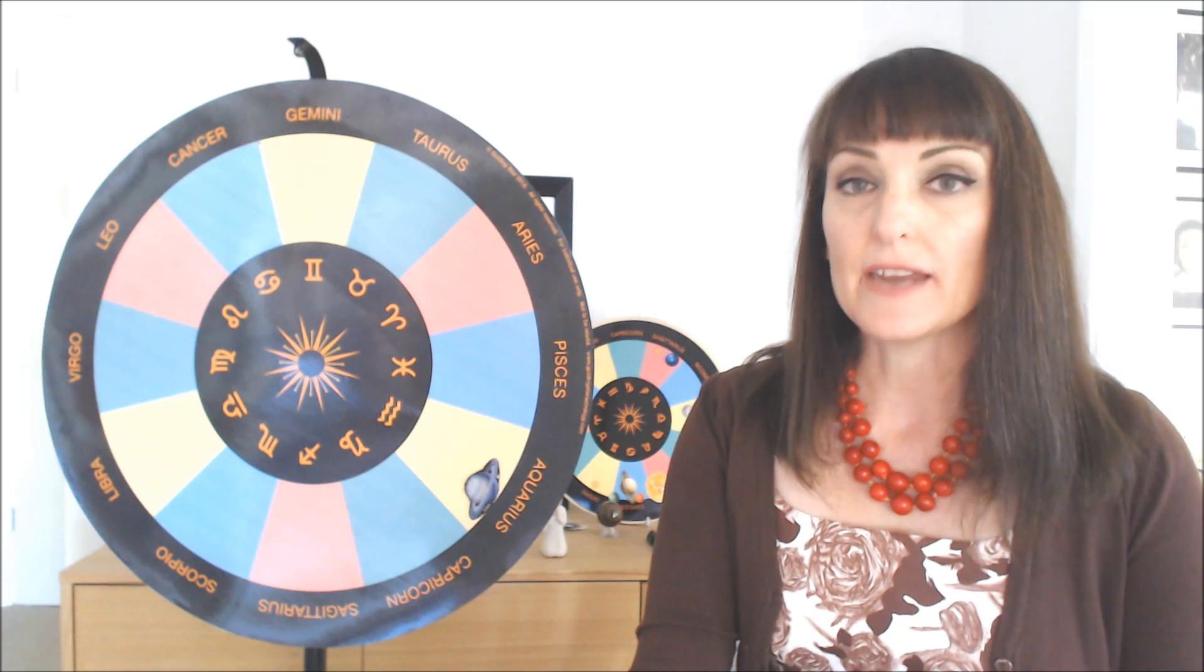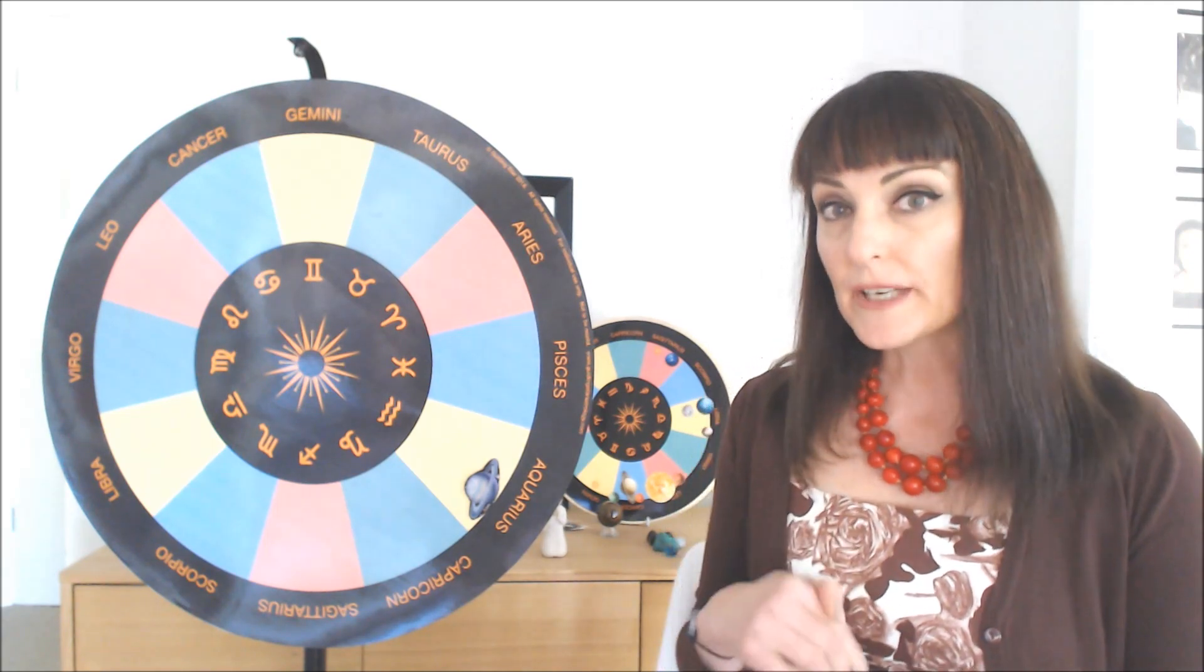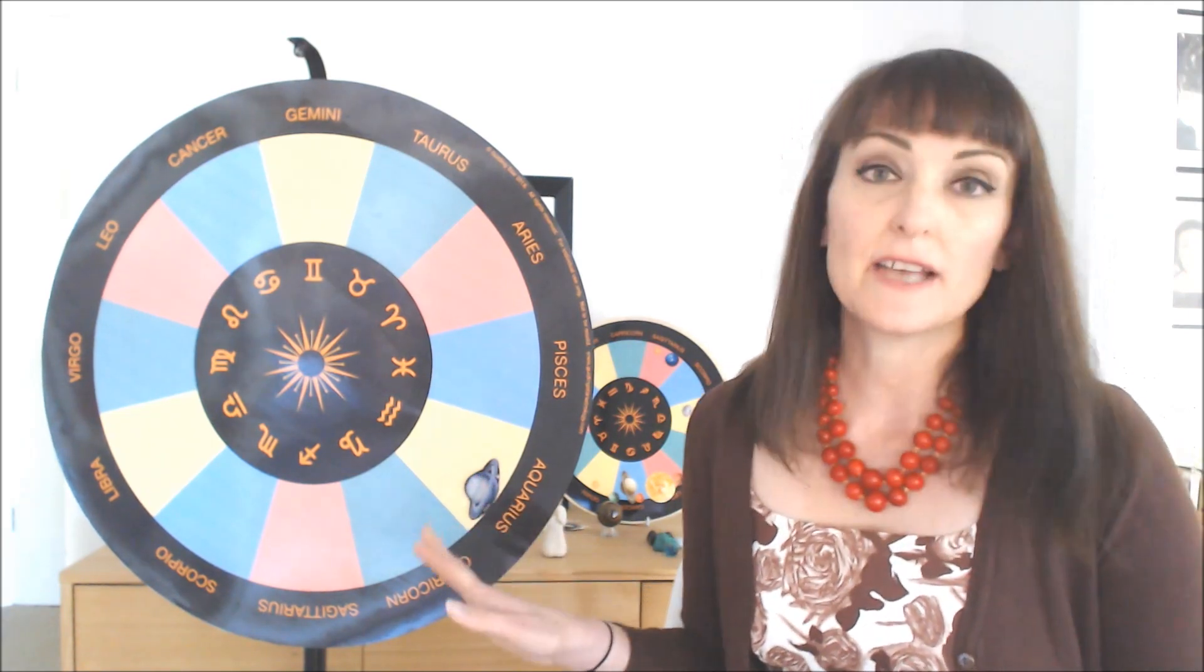So how do you tell where Saturn is sitting in your chart? Well, first of all, you need to go to a platform like planetwatcher.com, which will tell you where Saturn is currently at this point in time. Now, as I'm recording this, Saturn is sitting in the sign of Aquarius.